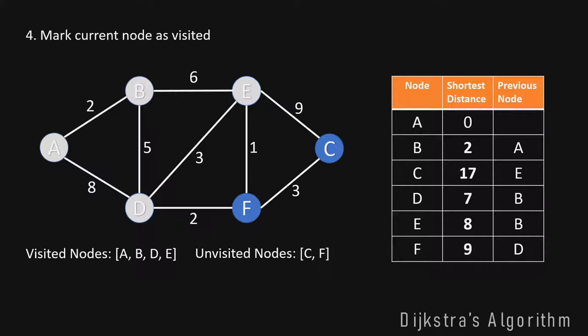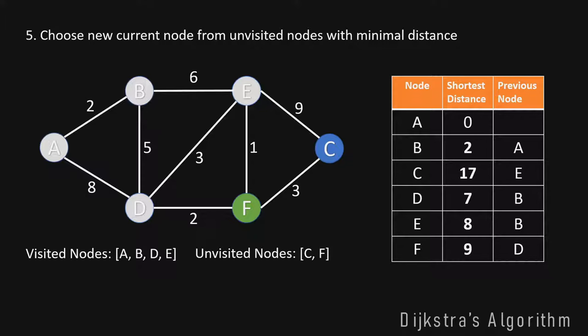Now F and C are left as unvisited nodes. F has distance 9 and C has distance 17. We start with F since it has the minimal distance. The only unvisited neighbor of F is C. We see that the distance from A to C over F is 12, so we update C's shortest distance to 12, set the previous node to F, and mark F as visited.